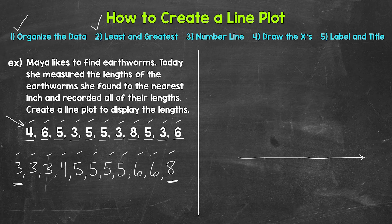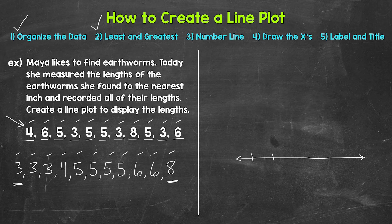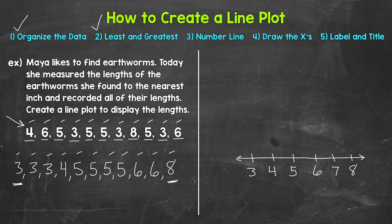Now we need to make our number line going from three to eight, making sure to include all of our data. We have six numbers: three, four, five, six, seven, eight. And although we don't have any earthworms that were seven inches, we do need to include seven on our number line since we're counting up from three to eight by one. Those numbers represent inches and we'll label that at the end.